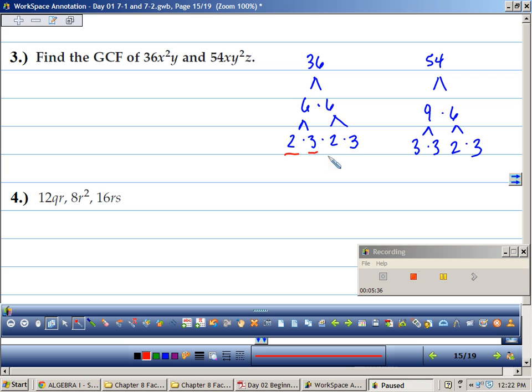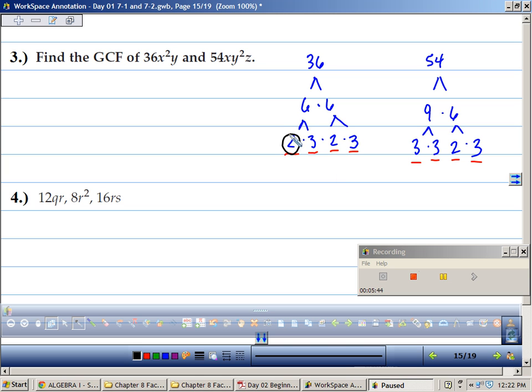So the factors of 36 are 2, 3, 2, 3, and 54 are 3, 3, 2, and 3. What do they have in common? They have 2 in common. They have a 3 in common. And another 3 in common. So 2 times 3 is 6 and 6 times 3 is 18. Their greatest common factor is 18. You may have not seen that, right? If you hadn't have factored it all out.